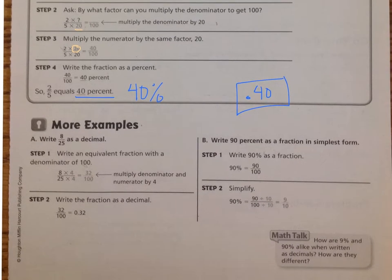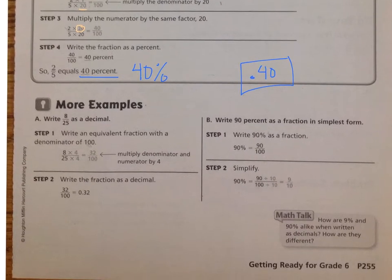Now let's look at some more examples. We're only going to look at the A column first, where it says write 8 twenty-fifths as a decimal. The first step with fractions is to make sure that we have an equivalent fraction with the denominator of 100. What do I need to multiply 25 by to make it 100? I multiply it by 4. So 8 times 4 is 32, 25 times 4 is 100.